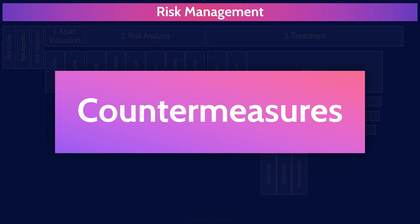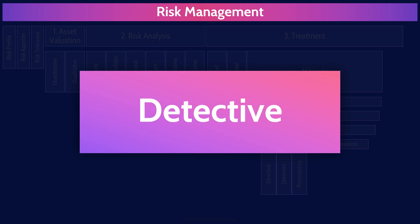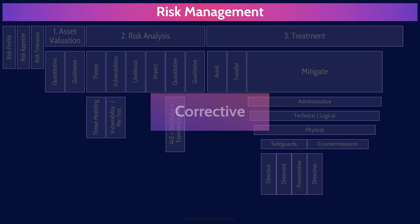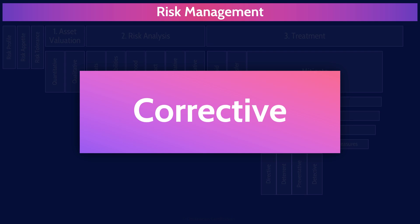Countermeasures are the controls we put in place to detect and respond to a risk that has occurred. Within countermeasures, we have three controls. Detective controls help identify risks that have occurred or are currently ongoing — examples include SIEM systems, intrusion detection systems, and smoke detectors. Corrective controls aim to reduce the negative impact of risks after they've occurred — for example, a fire suppression system that activates to put out a fire, minimizing the impact.